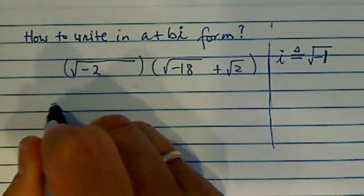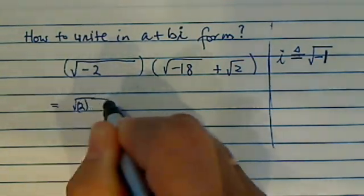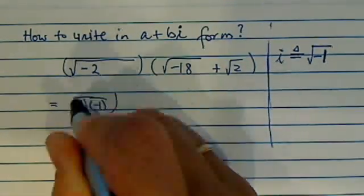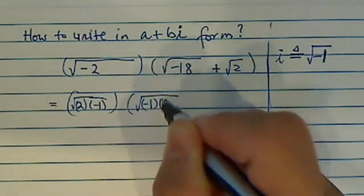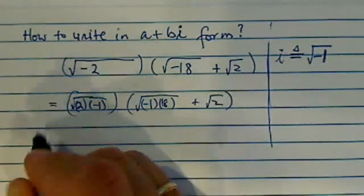So what we have here then is minus 2 times minus 1, this whole thing times the same thing, minus 1, 18 here, and then plus radical 2.